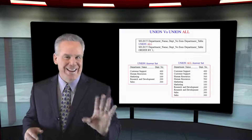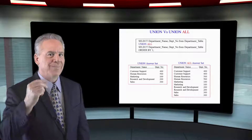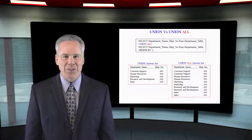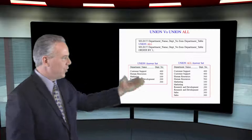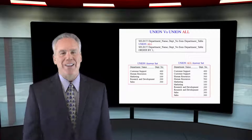I want to give you a visual of a union versus a union all. We're going to select the department name and the department number from the department table — union, and then union all — I'll show it both ways. We do the same thing in the bottom query: select department name, department number from the department table again. As you can see, with the union, you're only going to get back single rows, no duplicates. With the union all, since we did the same query on the same table twice, everything is duplicated. That's the difference between a union and a union all.